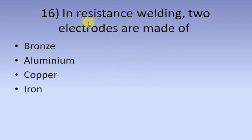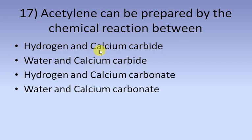In resistance welding, the two electrodes are made of bronze. Acetylene can be prepared by a chemical reaction between water and calcium carbide.